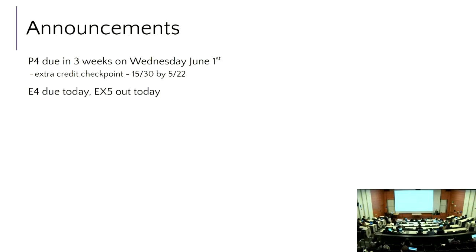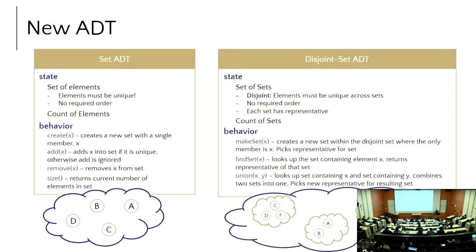The goal of today is to finish off our conversation about disjoint sets. We've been talking about the ADT and the theoretical pieces. My goal now is to make sure you have all the understanding of how it's actually implemented in code, because that's what I'm asking you to do for project four.